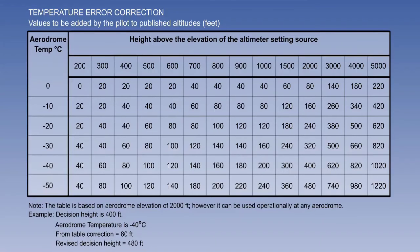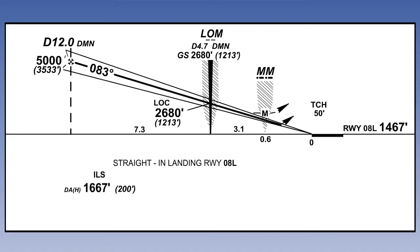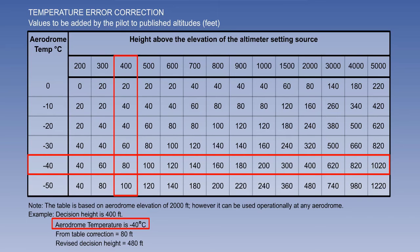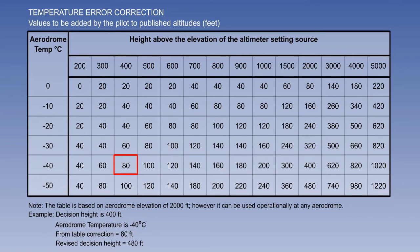There is also the table method, for use with the decision height or decision altitude. Decision height or altitude is used on an instrument approach, usually associated with cloud or fog where the runway may not be visible until a late stage. If we cannot see two bars of lead-in lighting, we cannot continue the approach. Suppose our decision height is 400 feet and the temperature is minus 40 — at sea level that's 55 degrees colder than ISA. Looking in the table where minus 40 meets 400, the correction is 80 feet, so we must use an indicated decision height of 480 feet.